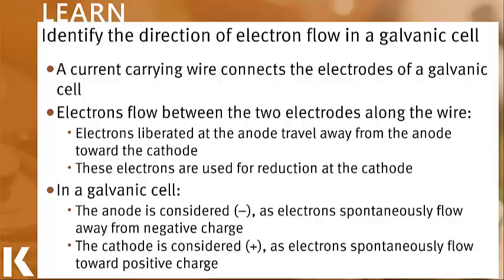First, the two electrodes of my galvanic cell are going to be connected by a current-carrying wire. This allows the current to flow between the two electrodes. The next thing I need to think about is how those electrons flow between the two electrodes along that wire.